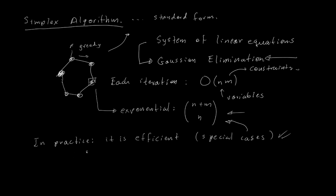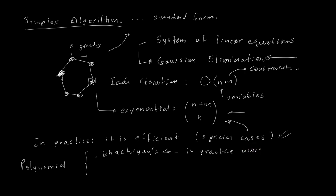There are two important algorithms which are polynomial. The first one requires polynomial time and was the first proven to be polynomial time. However, from the practical point of view, it's not very efficient in practice — it has huge constants so it takes too long. But from the theoretical point of view, this was very important because it proved that the linear programming problem can be solved in polynomial time.